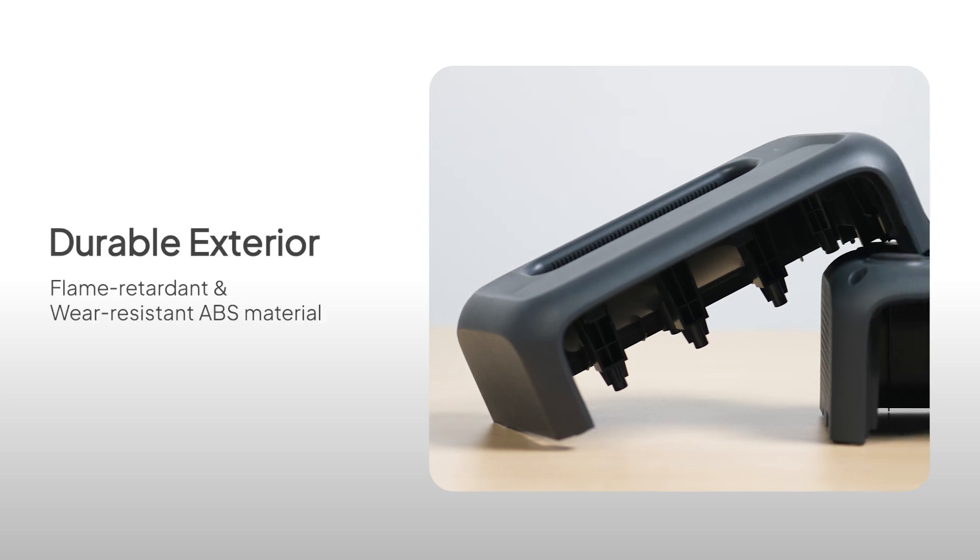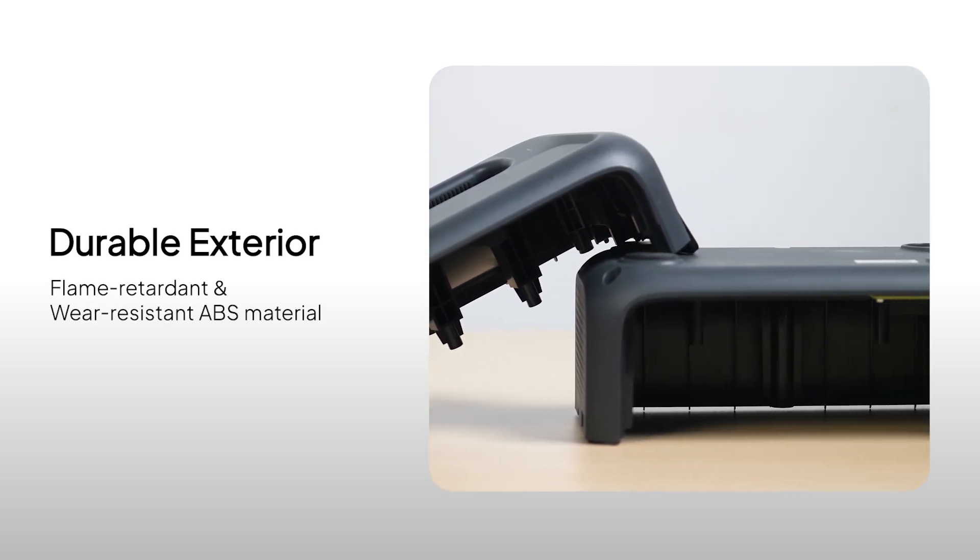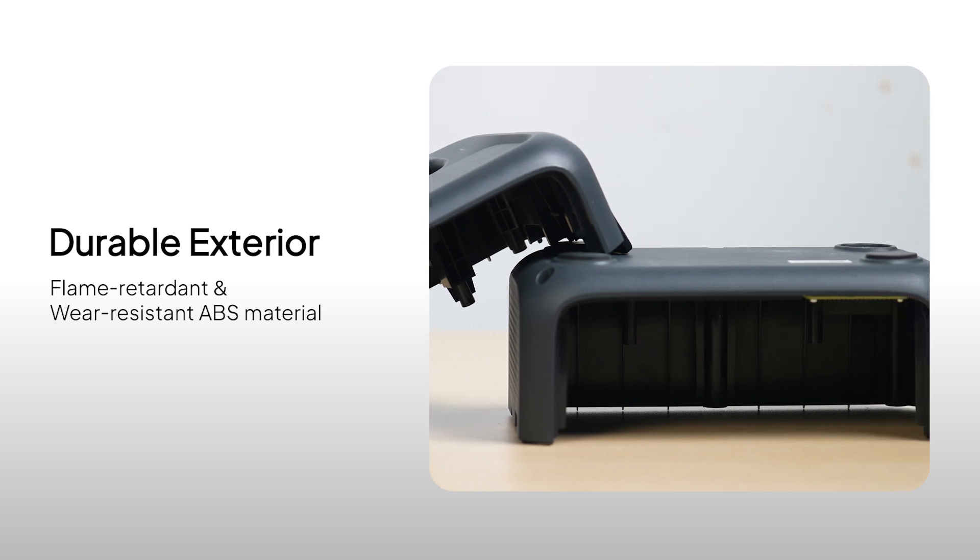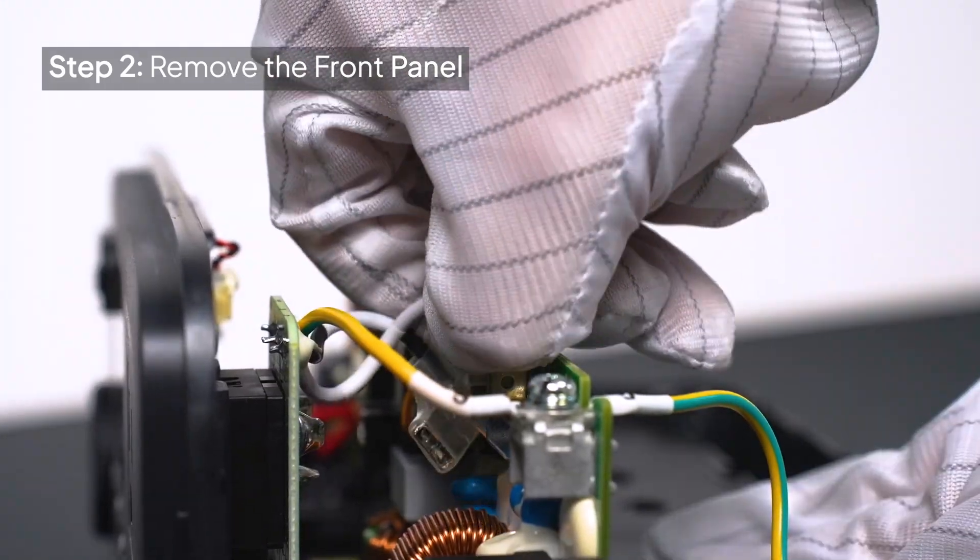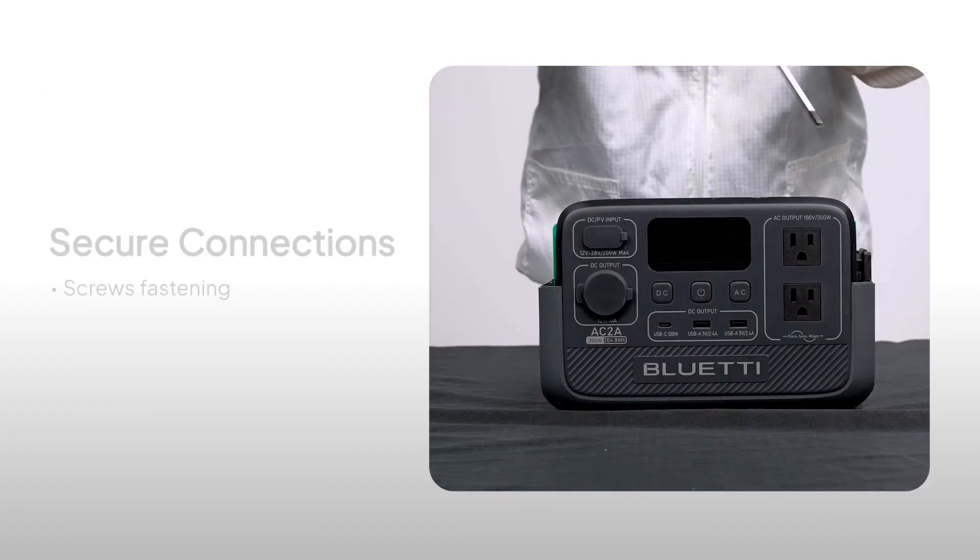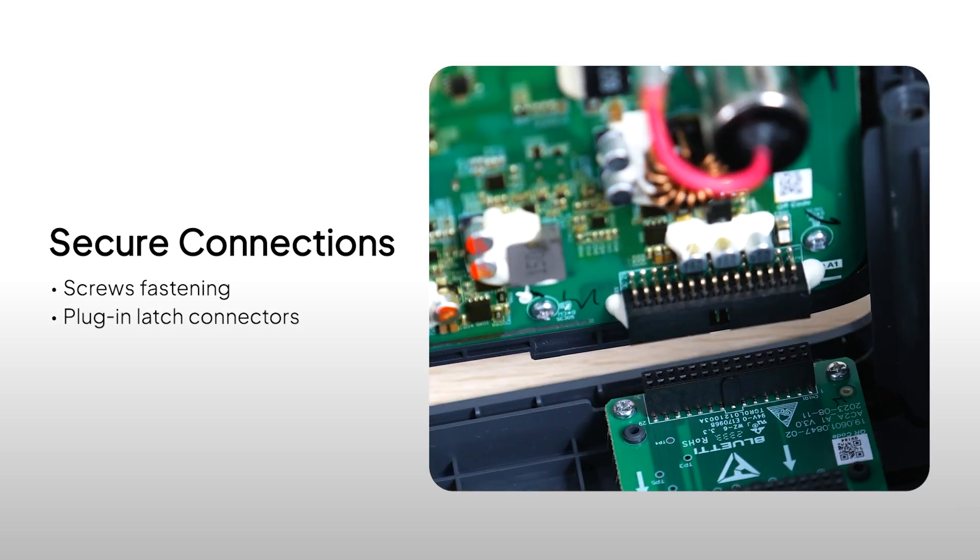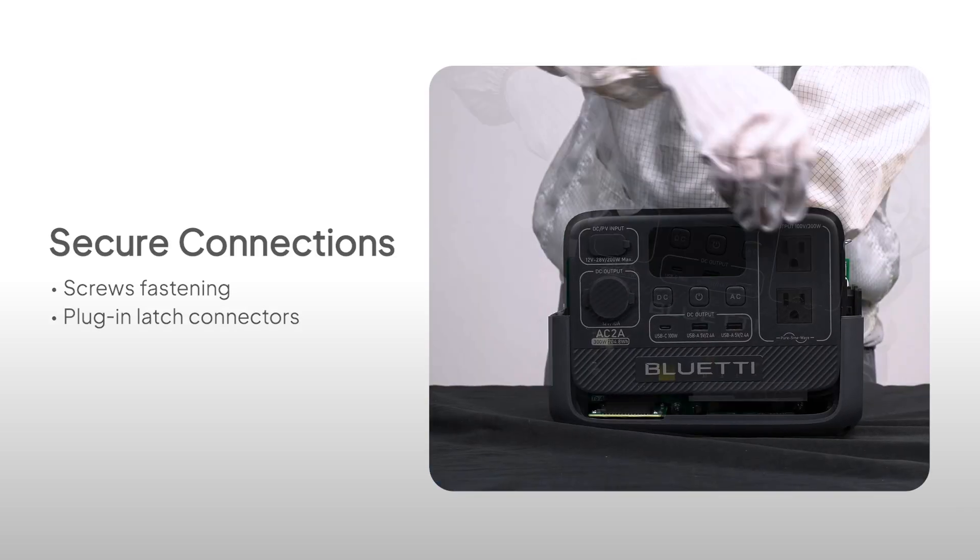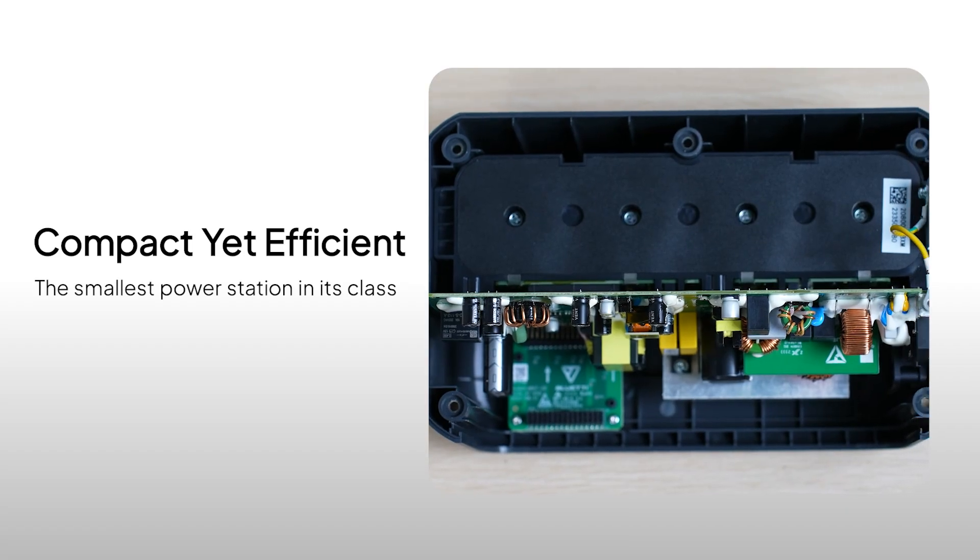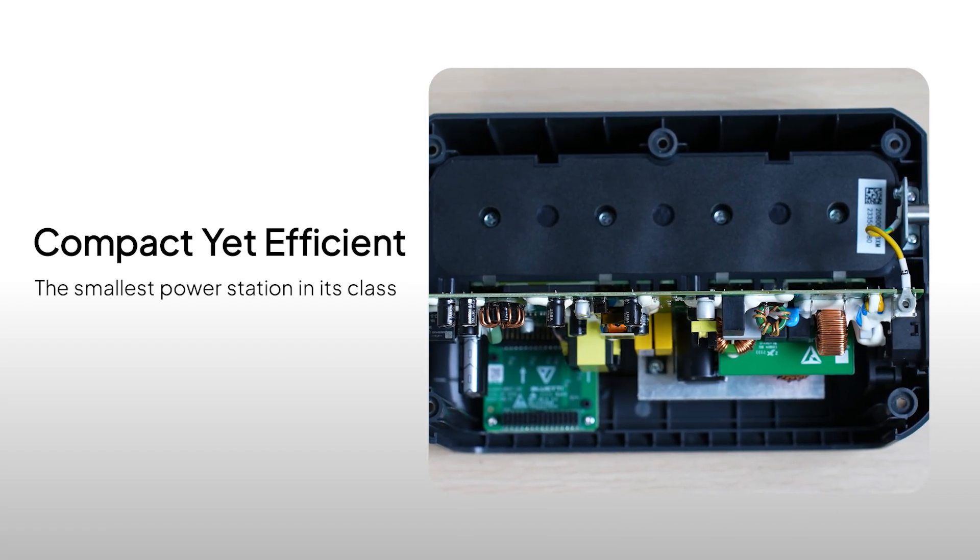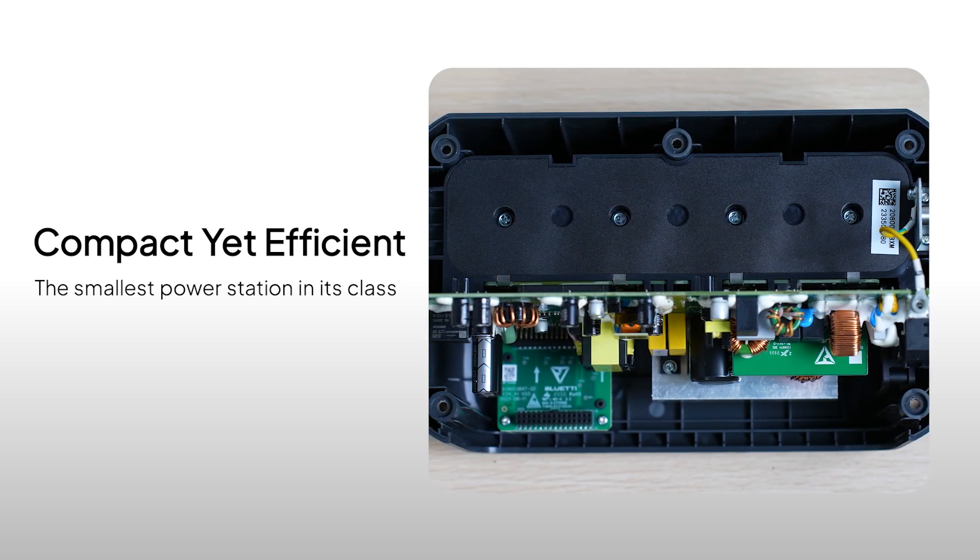The exterior of the AC-2A is made from durable, flame-retardant ABS material, designed to withstand wear and tear. It's built for longevity. The panel is securely fastened with screws, and the plug-in latch connectors keep everything tightly in place. As you can see, the layout is compact yet efficient, maximizing every inch of available space. It's the smallest power station in its class, all while still packing a punch.